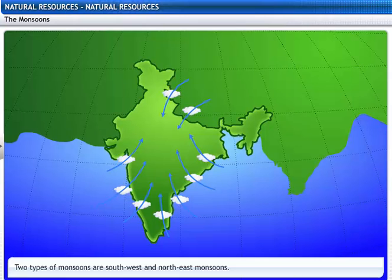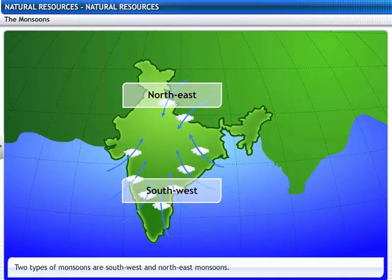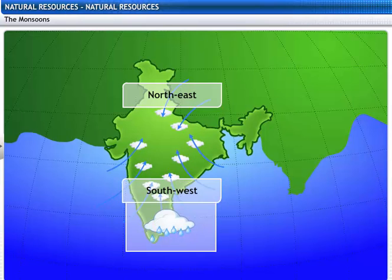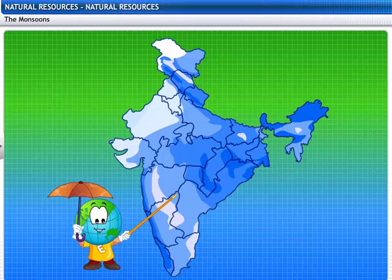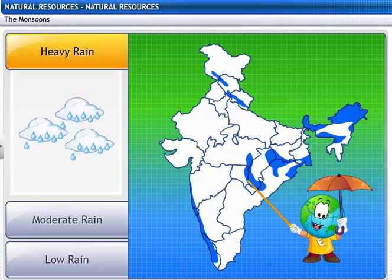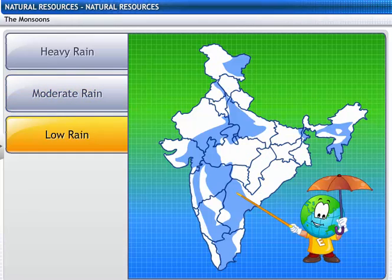There are two types of monsoons: southwest and northeast. Southwest monsoons bring the maximum amount of rainfall for India. This map shows the rainfall pattern of India. Some regions receive high rainfall and show maximum biodiversity, others have moderate rainfall, while some areas receive low rainfall and show minimum biodiversity.